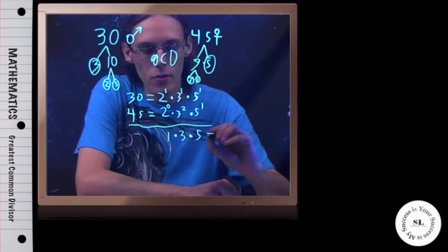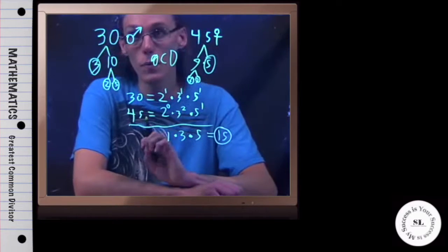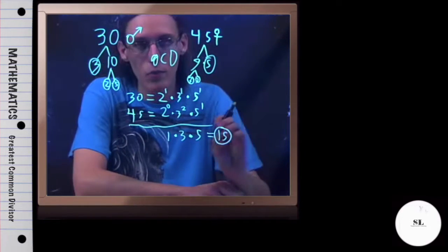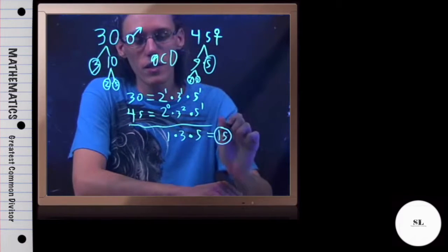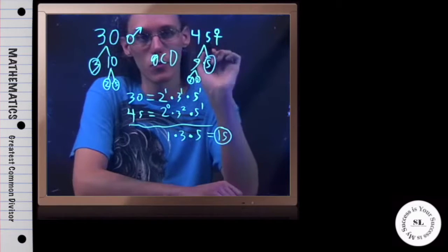Now, if I multiply those all together, I wind up with 15. And so 15 would be my greatest common divisor. And given what they were asking for, the maximum number of people you can place on a team, that means there can be 15 people on an individual male team and 15 people on an individual female team.